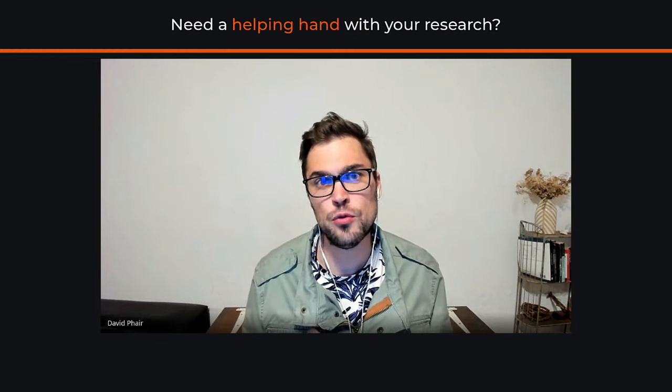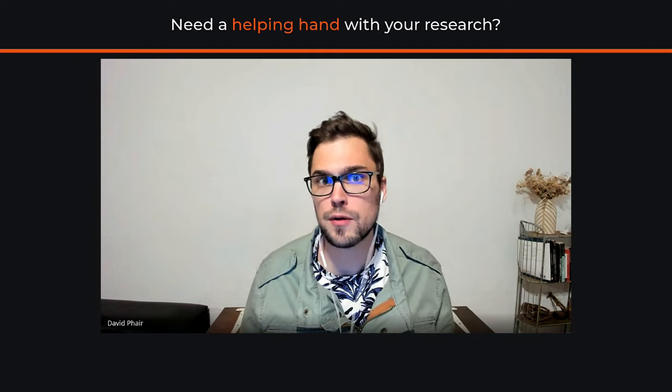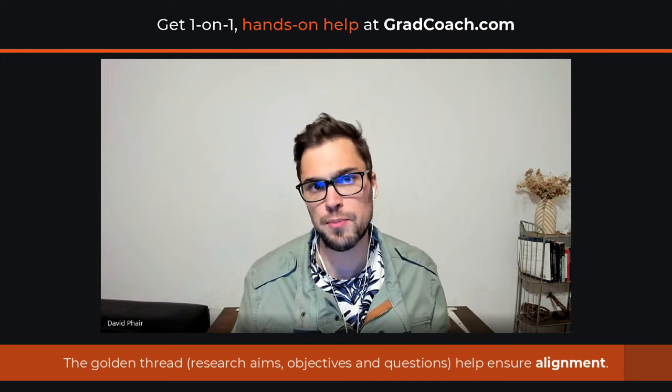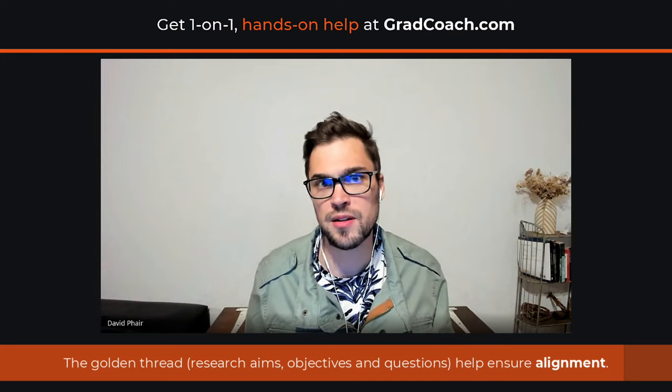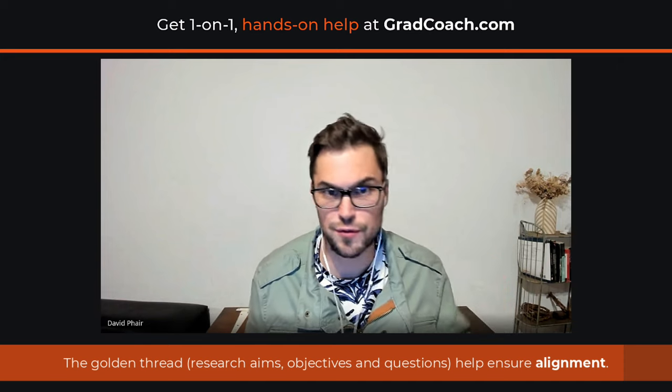Now that we have covered the parts of the golden thread, let's talk about how we actually utilize it. The first place we want to use the golden thread is to ensure we are maintaining alignment throughout our research project. The examples we have used represent really good alignment — there is a nice flow from the aim to the objectives to the research question, and everything moves smoothly telling a cohesive story. What would be an example, Alexandra, of a poorly aligned golden thread?